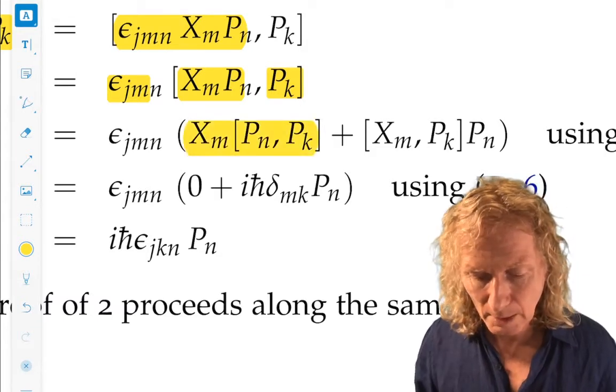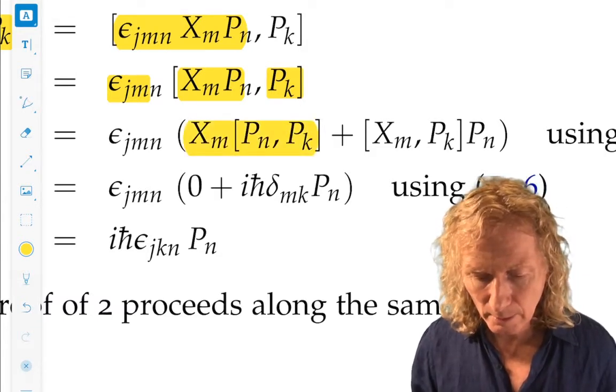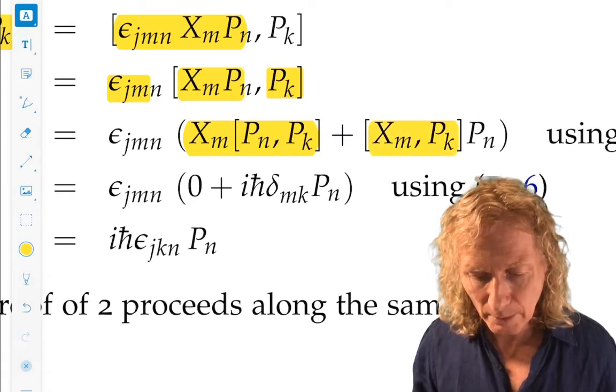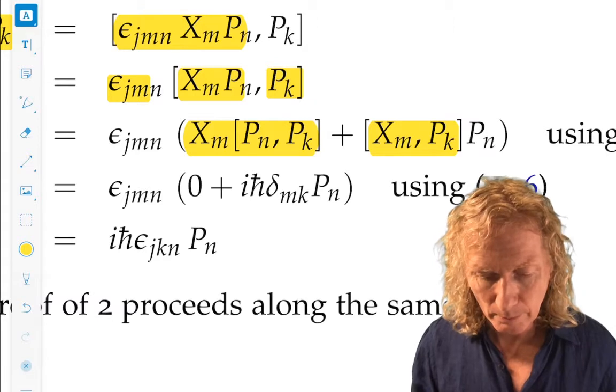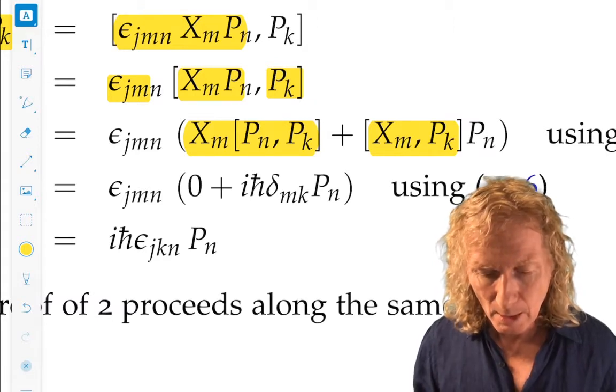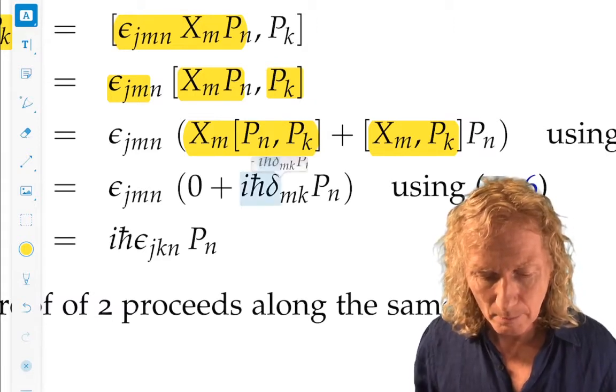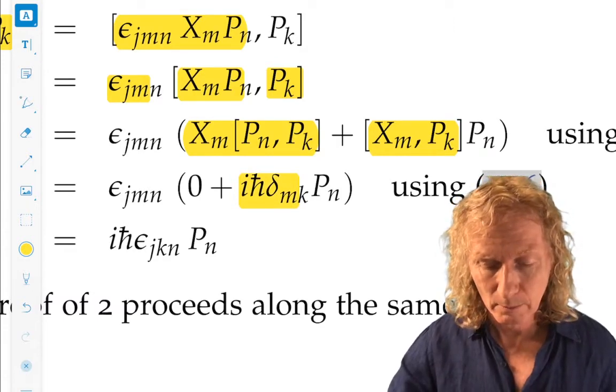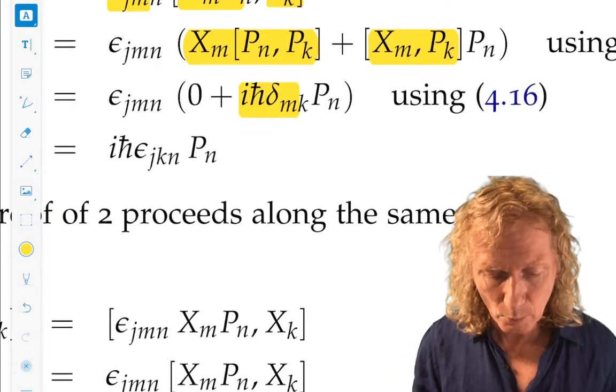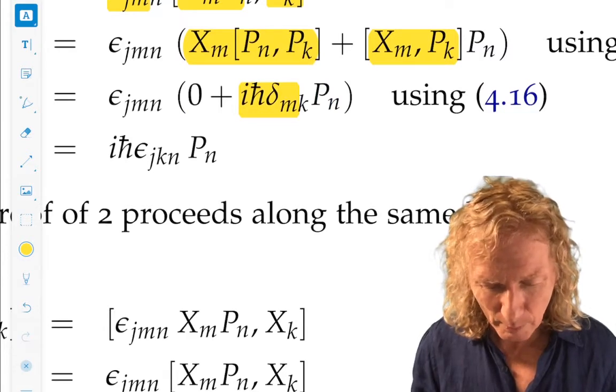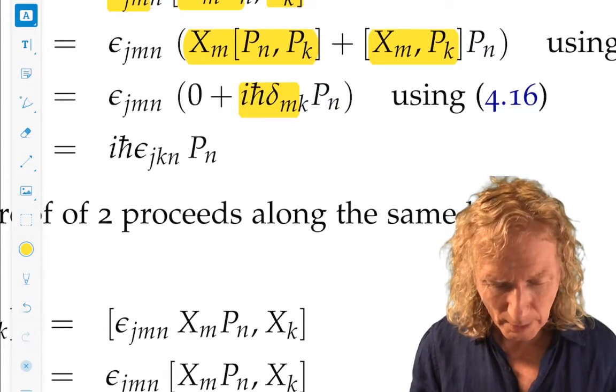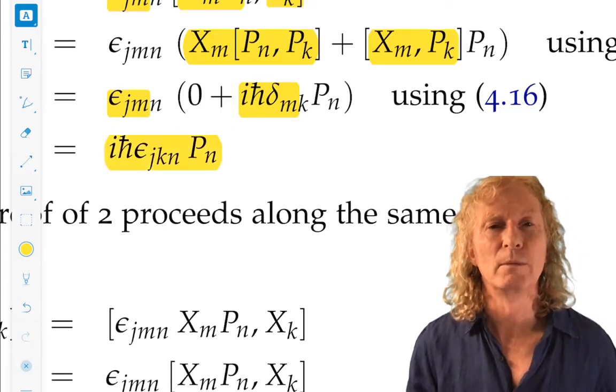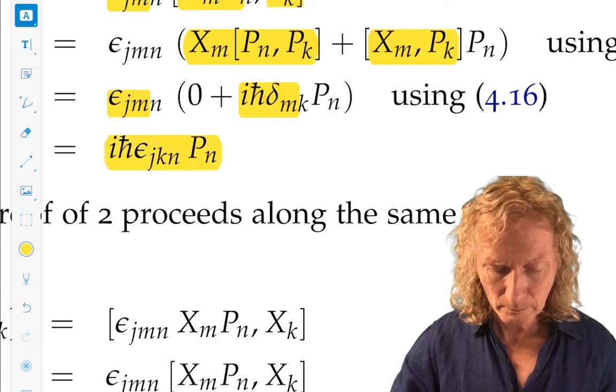Now, the first term has to be 0 because different components of P commute with themselves. If they're equal, then you get two equal signs of the Levi-Civita symbol and it has to be 0. So this has to be 0. What about the other one here? This is going to be 0 unless K equals M. So we're left with ih-bar delta_mk from the commutation relation. And so, we're left with, so that's 0 unless M equals K. We can put a K in for M and we're left with exactly what we want to prove. Slick.